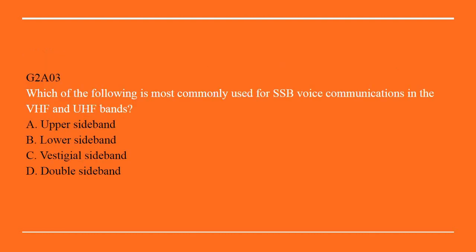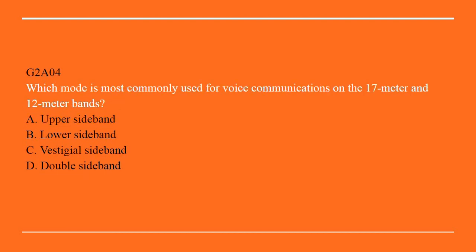G2A03: Which of the following is most commonly used for single sideband voice communications in the VHF and UHF bands? A. Upper sideband. B. Lower sideband. C. Vestigial sideband. Or D. Double sideband. Answer here A: Upper sideband.